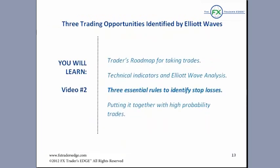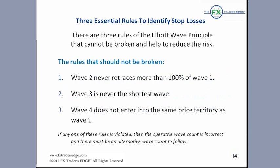Now we're going to talk about three essential rules to identify stop losses. When we get into a trade, where do we set our stop loss? Elliott Wave analysis provides specific points of ruin — it tells you when you should be out of a trade if it goes against you. These three rules help to reduce the risk on any trade. Rule one: Wave 2 never retraces more than 100% of Wave 1. Rule two: Wave 3 is never the shortest wave. Rule three: Wave 4 doesn't enter into the same price territory as Wave 1.